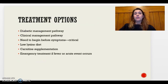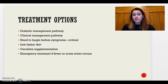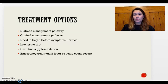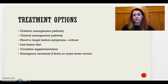Treatment options for this disorder include a dietary management pathway, specifically a low-lysine diet to monitor the individual's intake. Carnitine supplementation can also be used. Most importantly, early treatment — beginning before symptoms start — is essential to preventing the worsening of symptoms and total disability discussed earlier. Treatment is most often managed through diet.